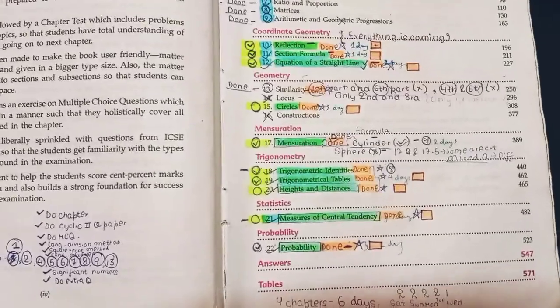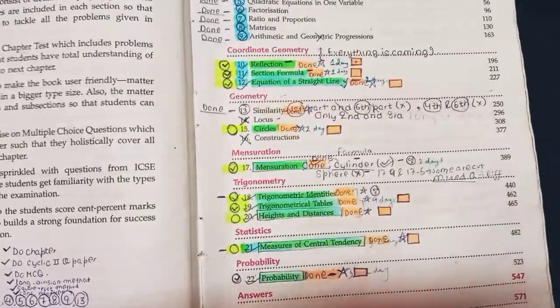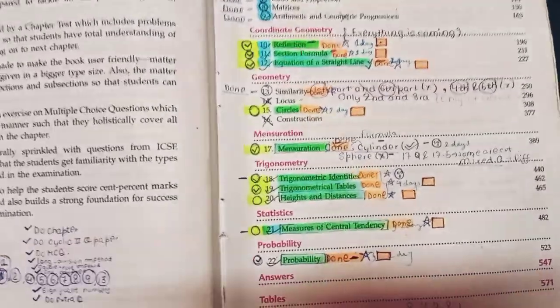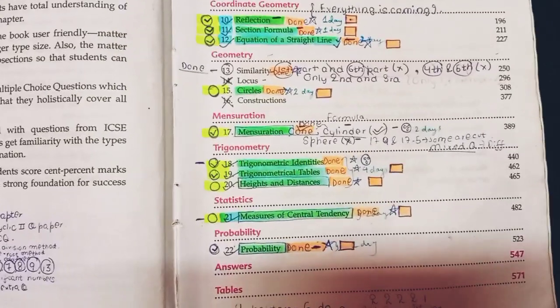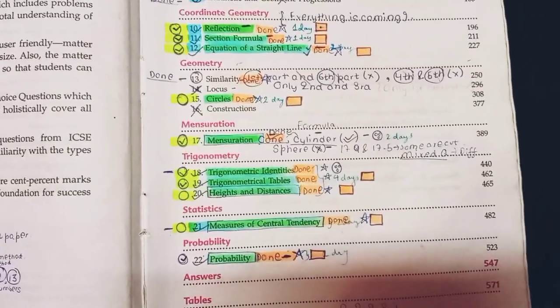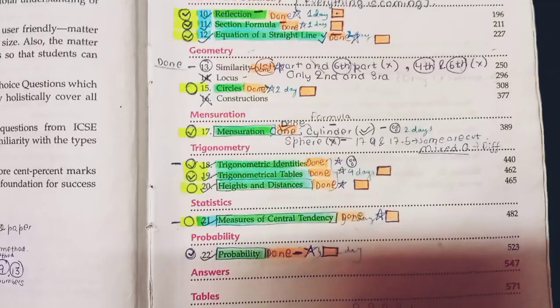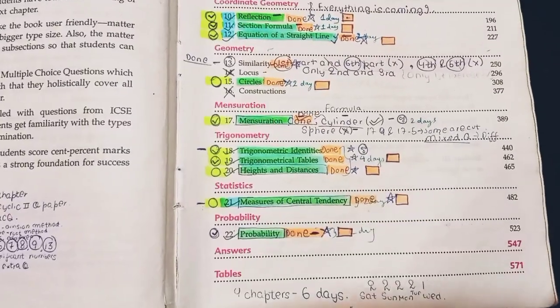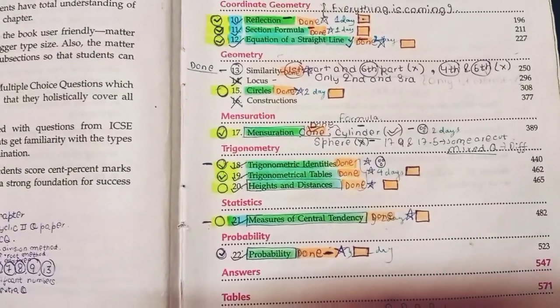Whenever you start revising a particular subject, for example mathematics, the chapters you've already done must be studied first and then move on to the chapters you are not familiar with or have not practiced very well. Brush up your concepts by practicing those chapters you've already done.